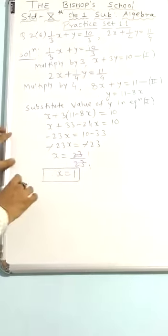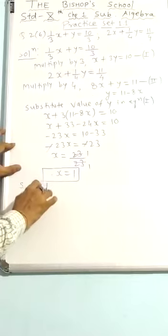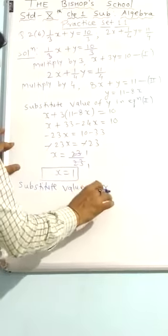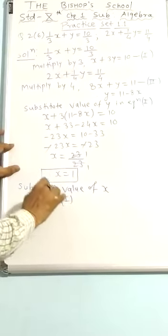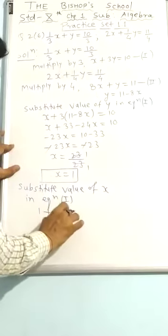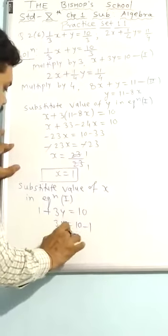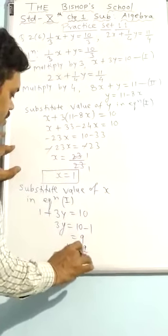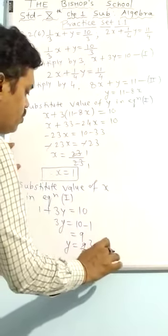Now we will find the value of y. Substituting the value of x in equation 1: 1 plus 3y equal to 10, so 3y equal to 10 minus 1, that is equal to 9. Therefore y equal to 9 upon 3, which gives y equal to 3.